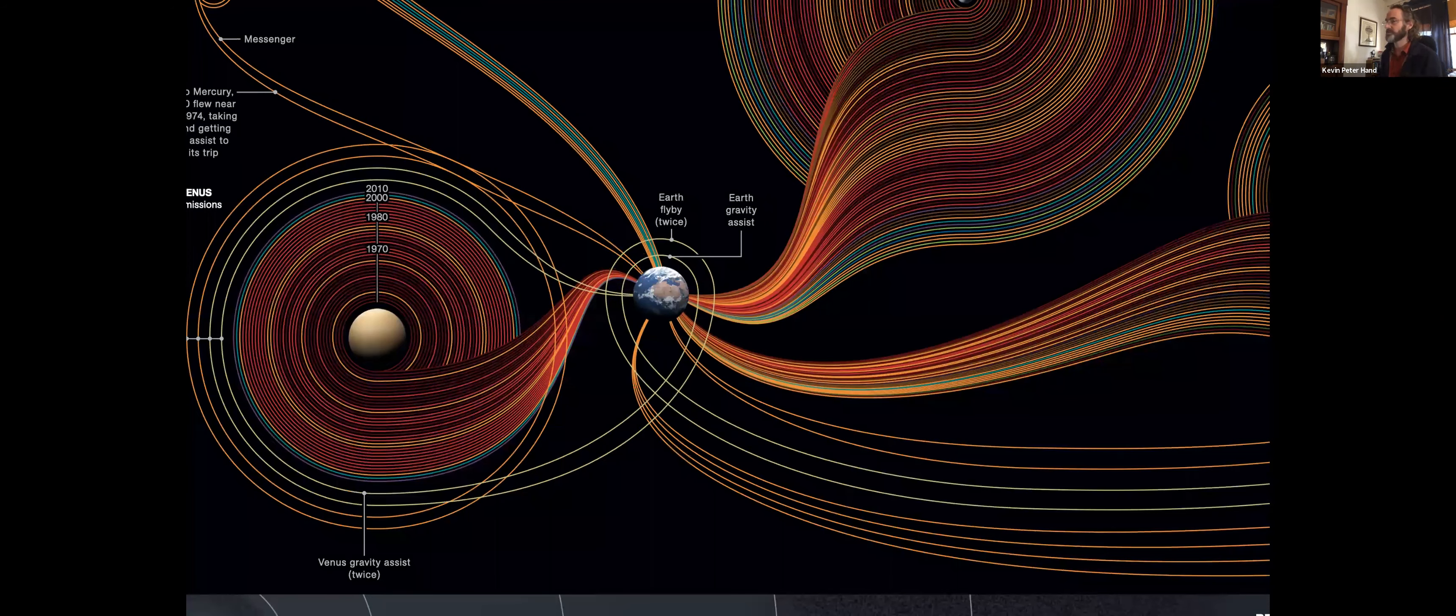This beautiful diagram put together by National Geographic shows a line for each of the robotic spacecraft that NASA and other space agencies have launched to various worlds. The brighter lines are the successful missions, the dull lines are failed missions. There have been many missions to our moon, to Mars, even to Venus, and just a few of those lines extend out beyond the asteroid belt. These lines represent spacecraft with names like Voyager and Pioneer, Galileo, Cassini, Juno, and more recently, the New Horizons spacecraft that went out to Pluto.